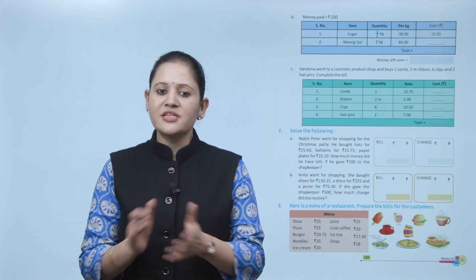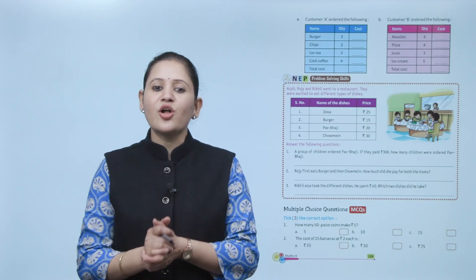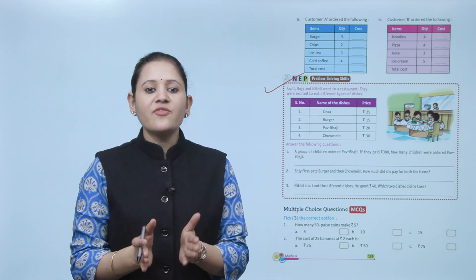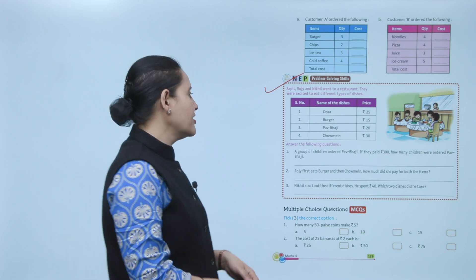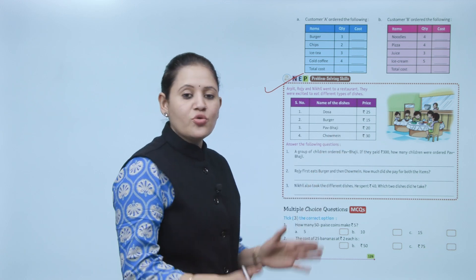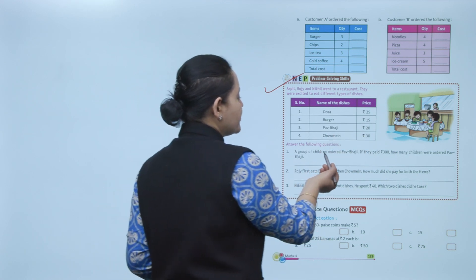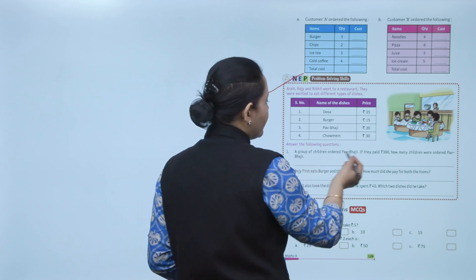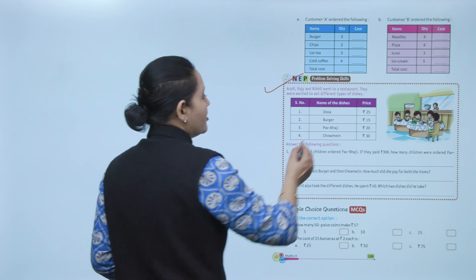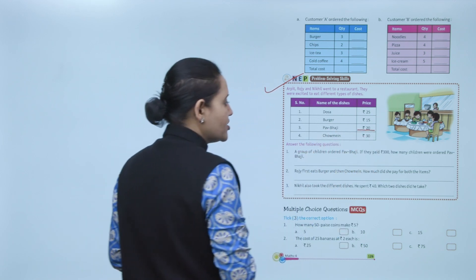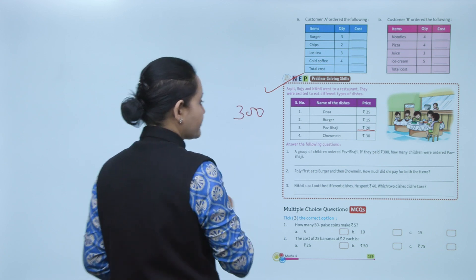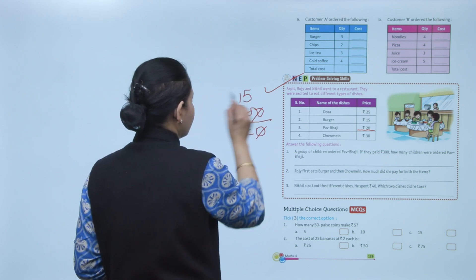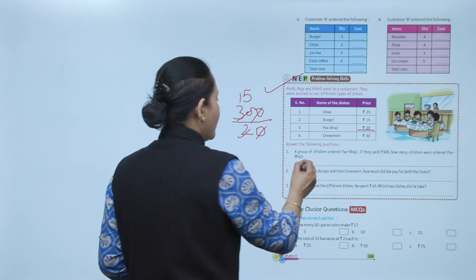Some more examples are given for practice. Next is problem solving skills. Joy and Nickel went to a restaurant; names of dishes and their prices are given. A group of children ordered pav bhaji and paid rupees 300. The cost of pav bhaji is rupees 20, so 300 divided by 20 equals 15. That means 15 children ordered pav bhaji.